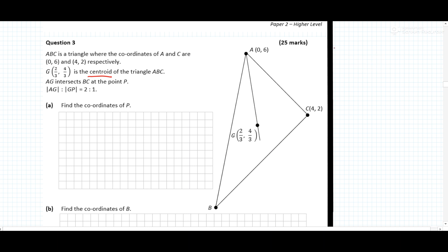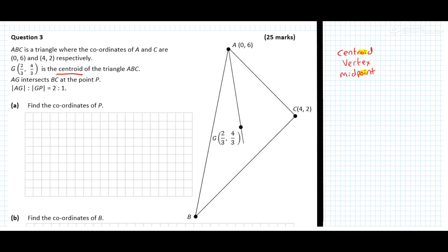Whenever I get a question like this I look at it and note that AG intersects BC at the point P, so BC down here has the midpoint P on it. AG to GP is split up in the ratio of 2:1 by the centroid G.